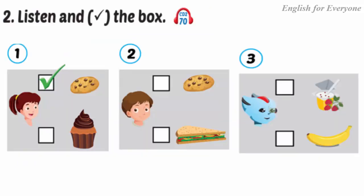B two: Listen and tick the box. Look at the pictures and listen. There is one example. One: Mom, can I eat a cookie? Yes, you can. Oh okay, thanks Mom. Can you see the tick? This is an example. Now listen and tick the box.